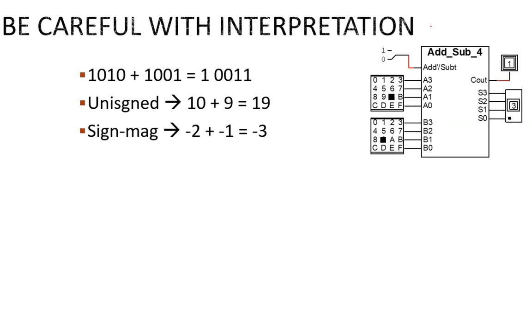In the first one, the chosen mode is add, and the inputs are binary 1010 and 1001. The result is 10011. Assuming unsigned binary, this converts to decimal as 10 plus 9 equals 19. Good news there!